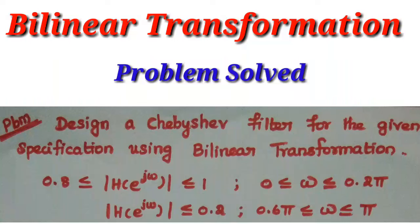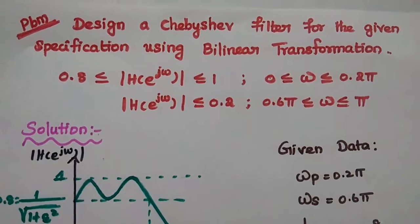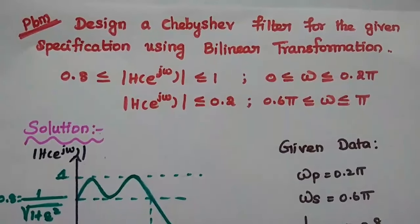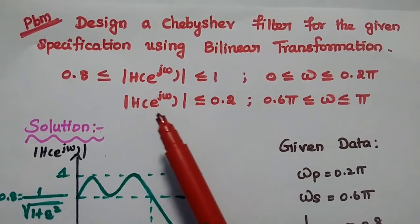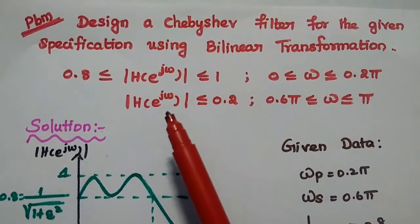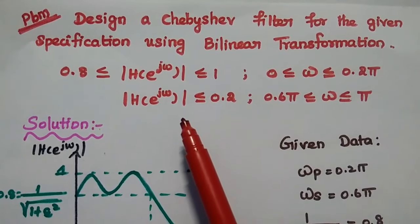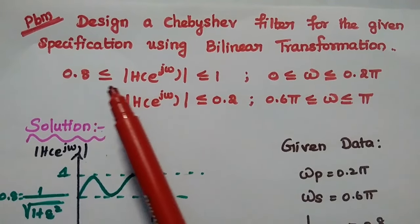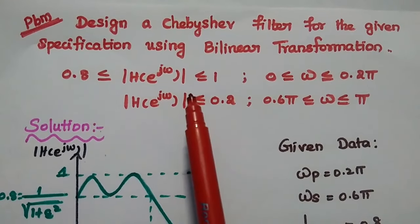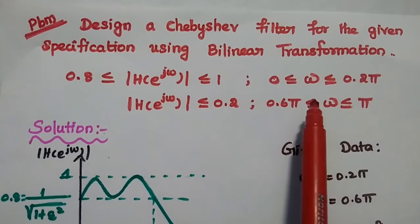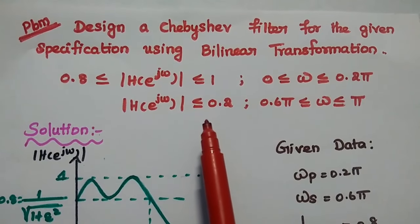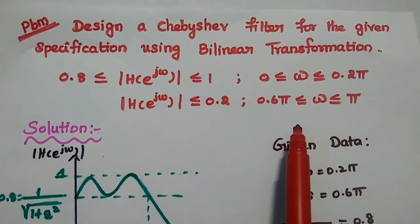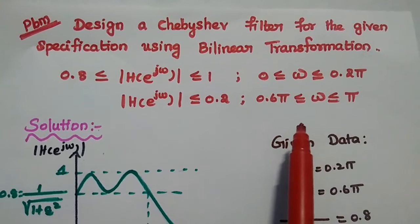Dear students, now we are going to solve an important problem: design a Chebyshev filter for the given specification using bilinear transformation. The magnitude response is given in digital frequency — the magnitude is between 0.8 and 1 when frequency is between 0 and 0.25π, and the magnitude is less than or equal to 0.2 when frequency is between 0.6π and π.